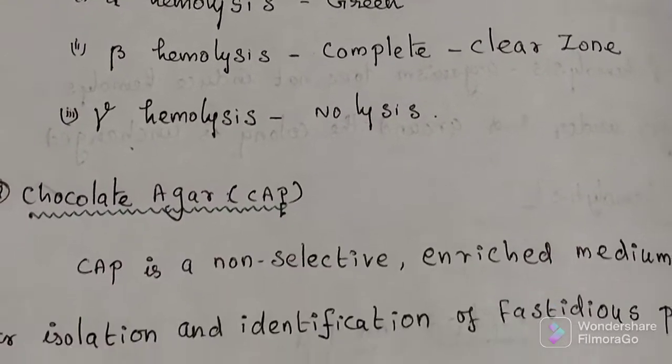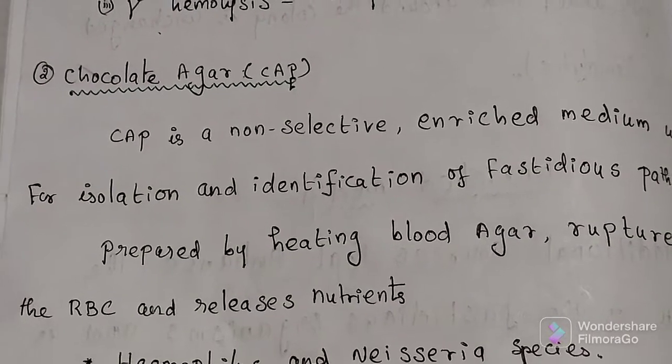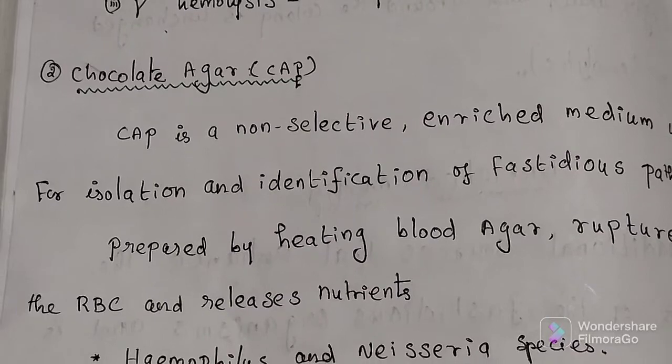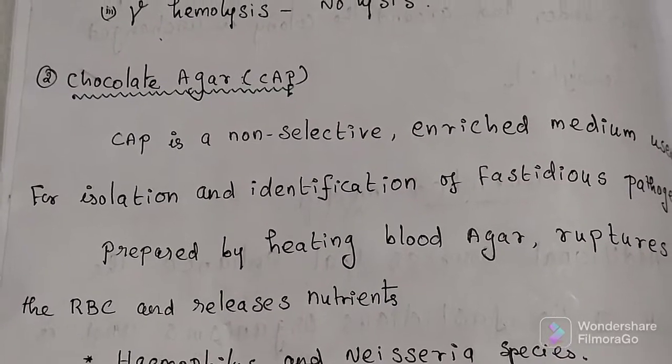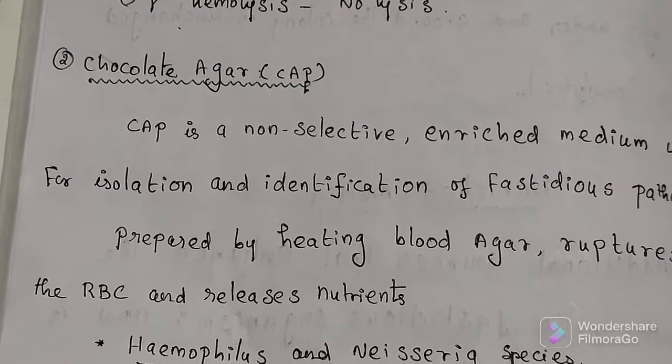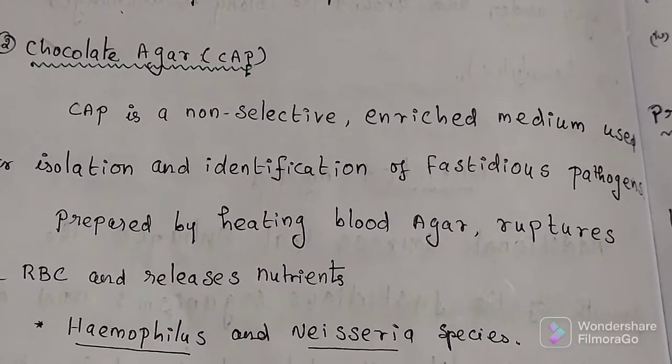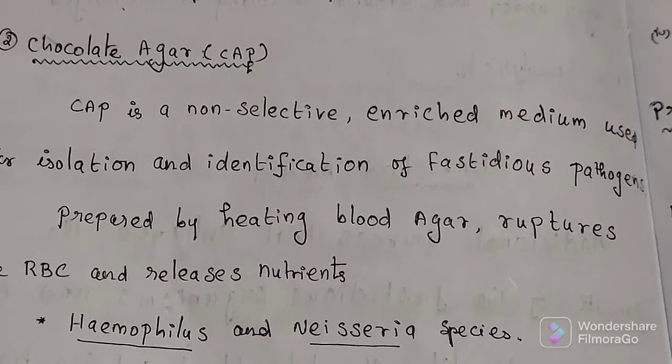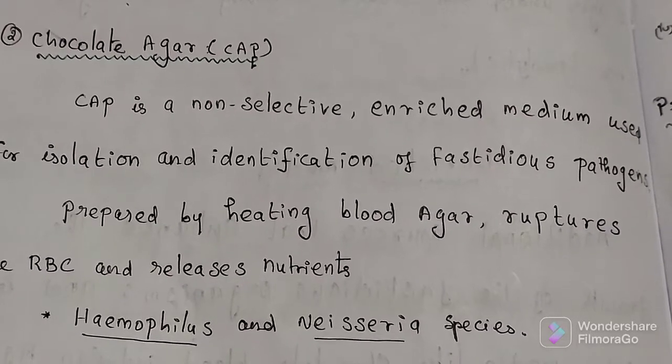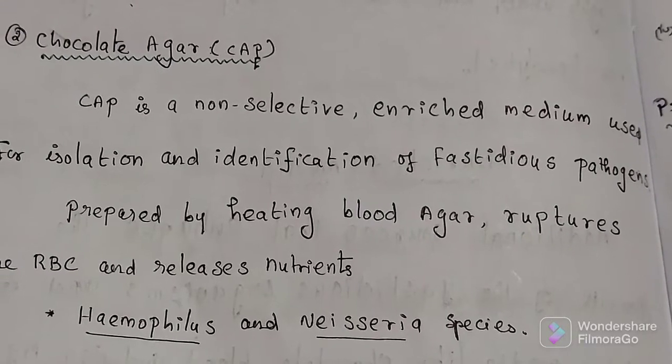Second enriched medium, chocolate agar medium. Chocolate agar is a non-selective enriched growth medium used for isolation of pathogenic bacteria. It is a variant of the blood agar plate containing red blood cells that have been lysed by heating to 80 degrees Celsius.